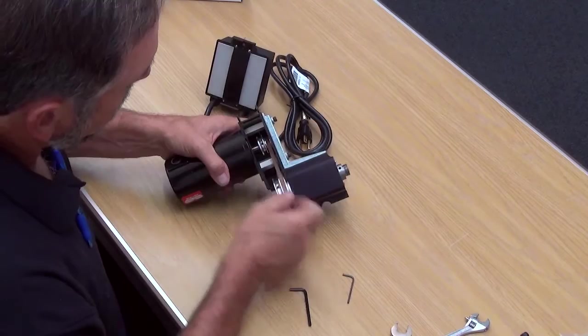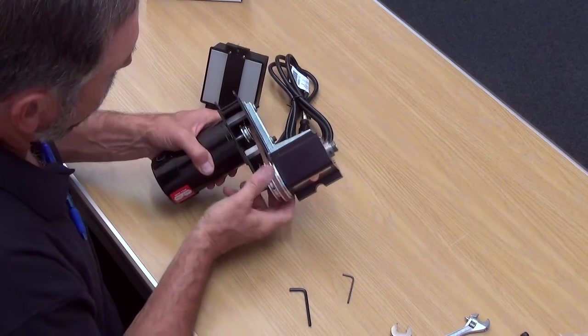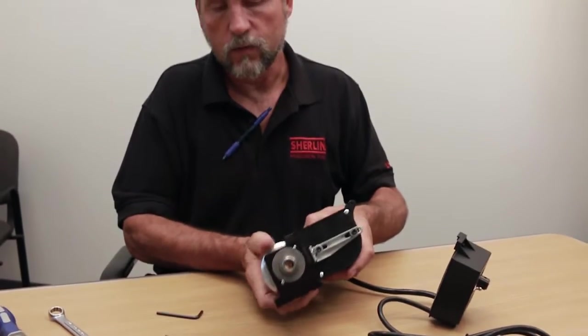Now the motor pulley is on tight. The alignment is good with the headstock pulley. It spins free. Nothing's rubbing anywhere.